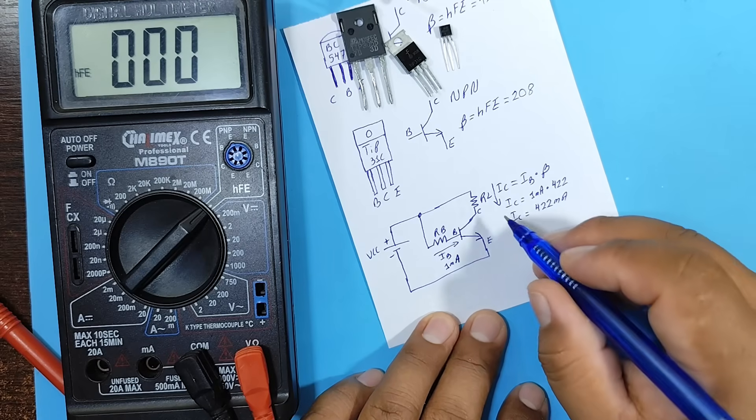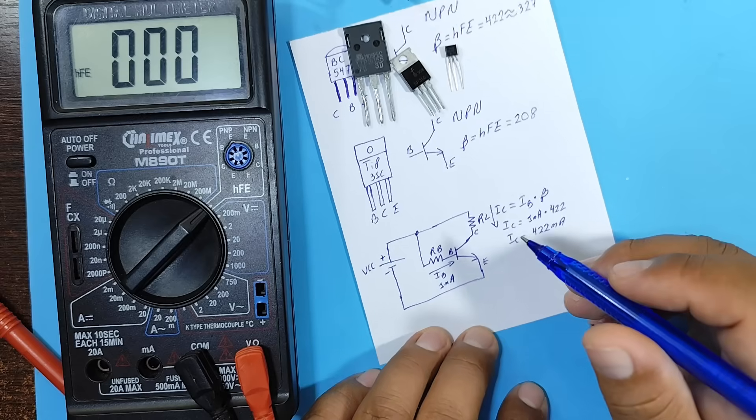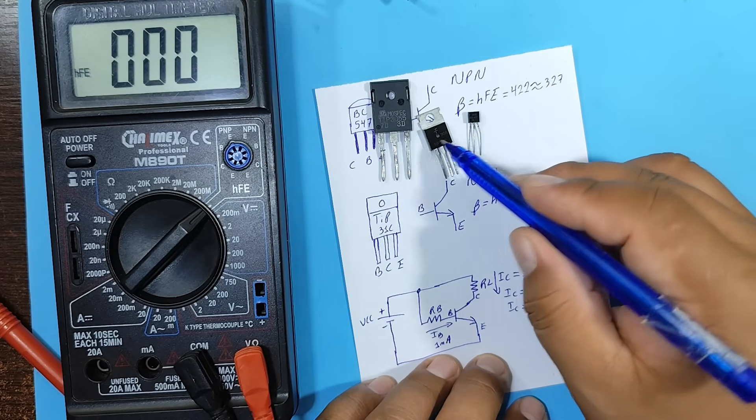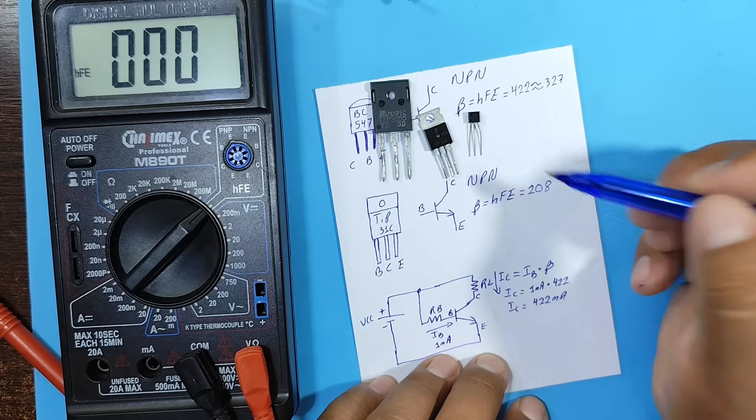Therefore, more gain means more collector current. And as you just saw, the higher the power of your transistor, the lower the gain it will have.